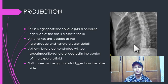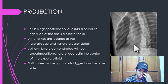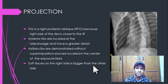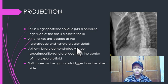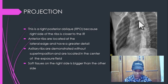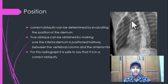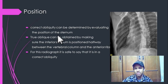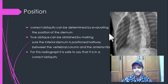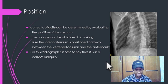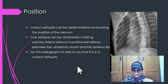Next, we jump to the RIBS Oblique. For the projection, this is a Right Posterior Oblique (RPO) because the right side of the ribs is closer to the IR. The anterior ribs are located at the lateral edge and have greater detail. The axial ribs are demonstrated without superimposition and are located in the center of the exposure field. The soft tissue on the right side is bigger than the left side. For the position, correct obliquity can be determined by evaluating the position of the sternum. True obliquity is obtained by making sure the inferior sternum is positioned halfway between the vertebral column and the anterior ribs. For this radiograph, it is safe to say the obliquity is correct.